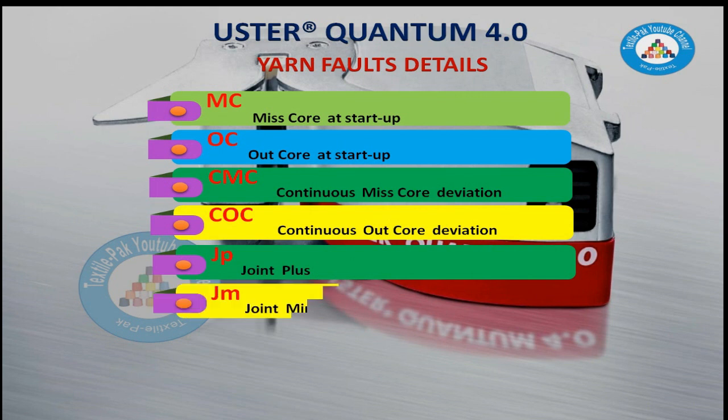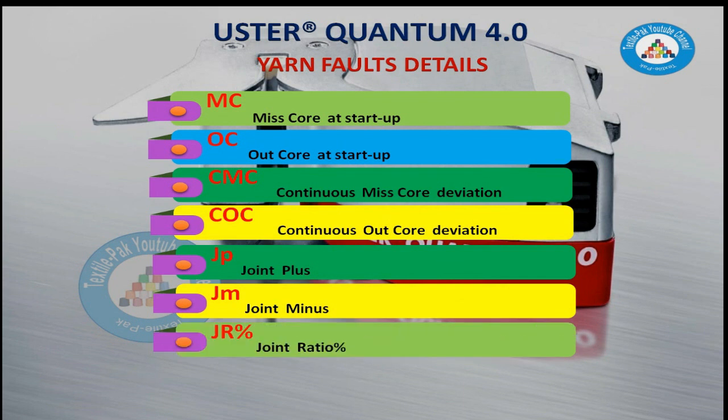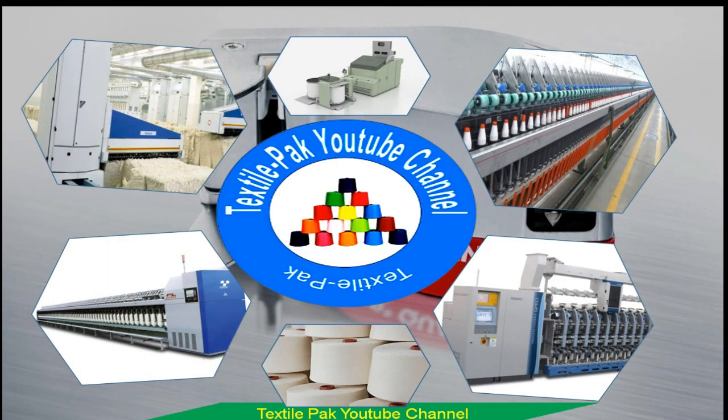JP – Joint Plus, JM – Joint Minus, JR% – Joint Ratio%. Thanks for watching Textile Pack YouTube.